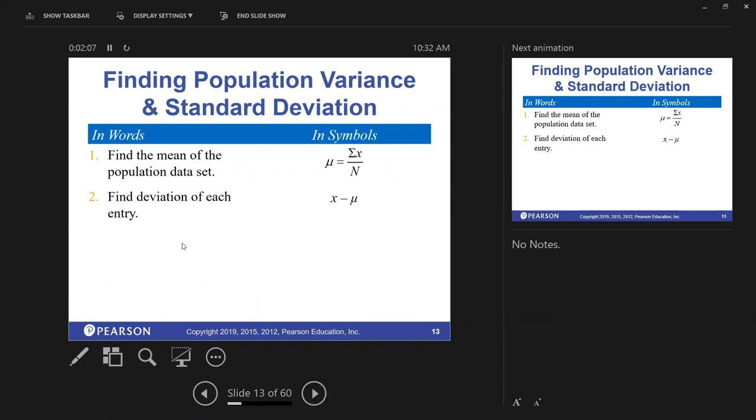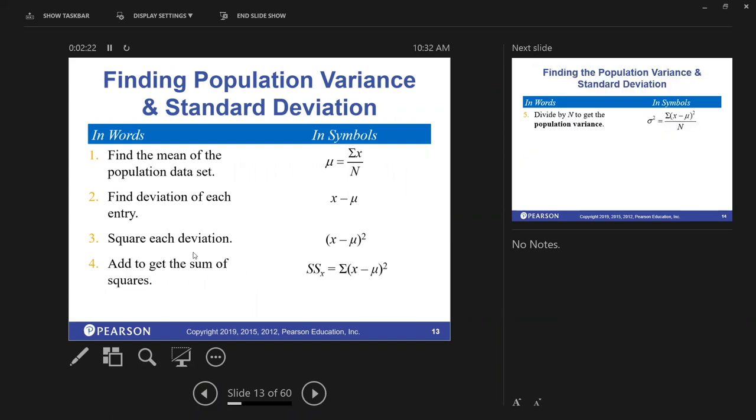We have the deviation, which is going to be (x - μ). So we're talking about population there. The square of a deviation—that's going to be important when we're starting to determine what's called variance, population variance. And when we do variance, we have to do what's called the sum of the squares of the deviation.